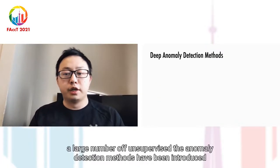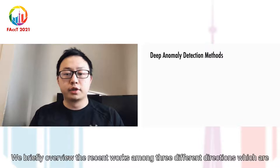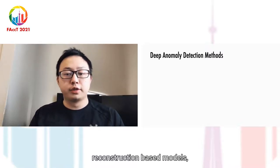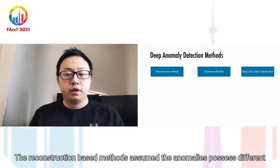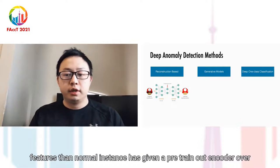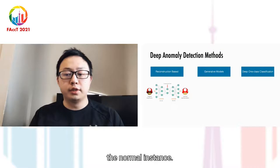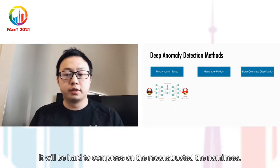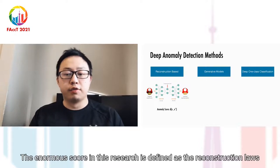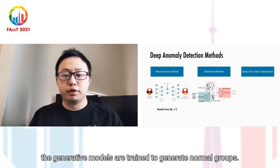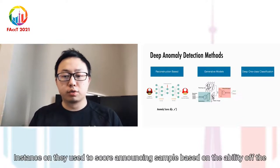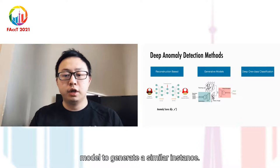In recent years, a large number of unsupervised deep anomaly detection methods have been introduced. Here we briefly overview the recent works among three different directions: reconstruction-based models, generative models, and deep one-class classification models. The reconstruction-based methods assume anomalies possess different features than normal instances. The generative models are trained to generate normal groups and score samples based on the ability of the model to generate similar instances.